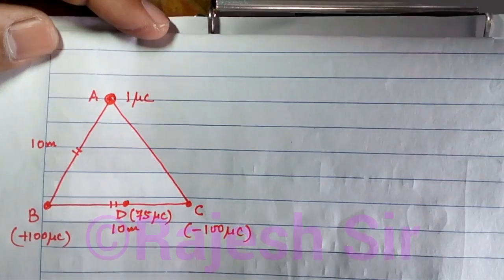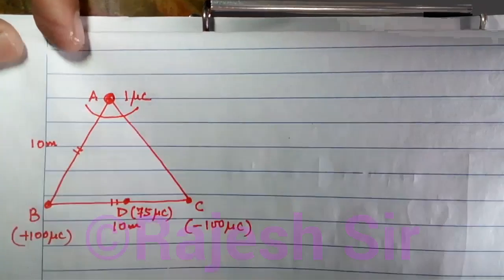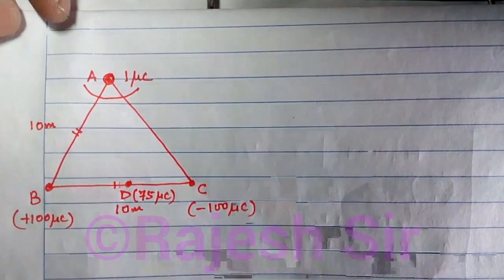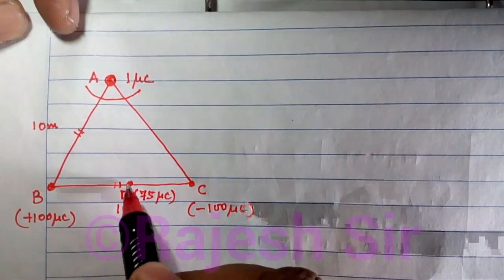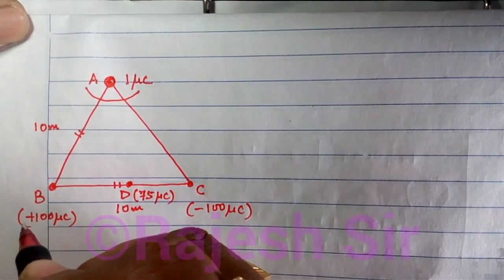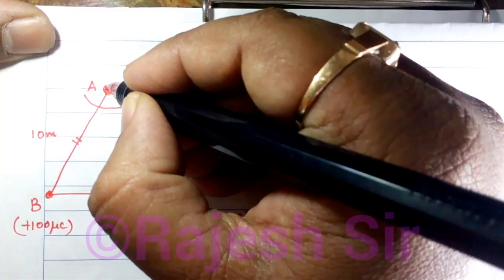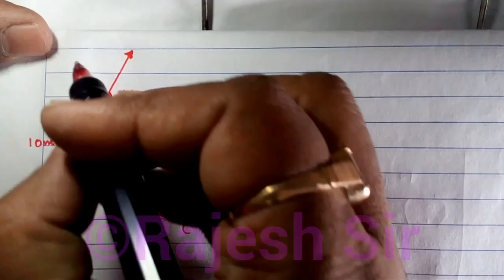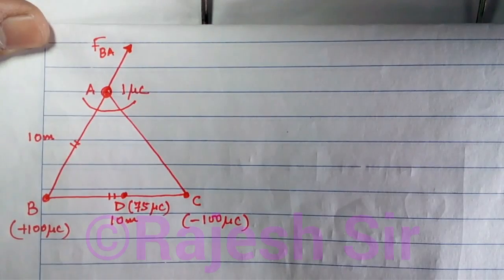Now, what is required? We need to find out the force experienced by the charge placed at A. We have three charges at B, C, and D applying forces on A. B being positively charged and A also being positively charged, B is going to apply a repulsive force on A, directed as shown in the figure. This force is written as FBA.